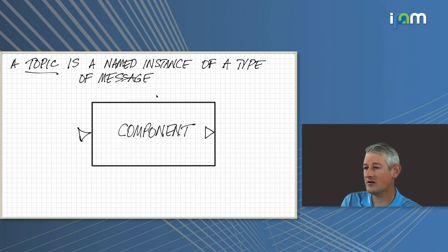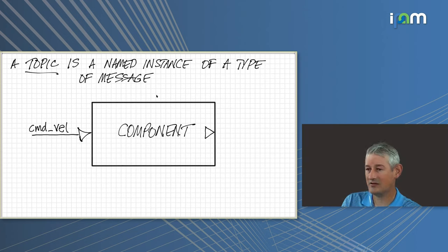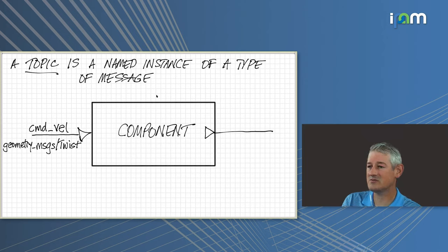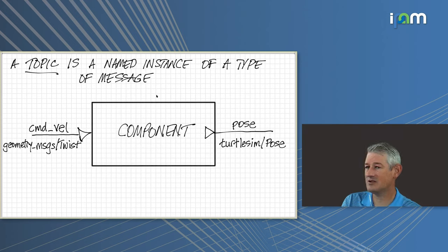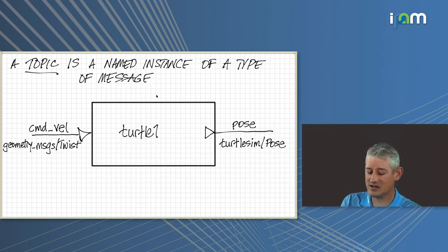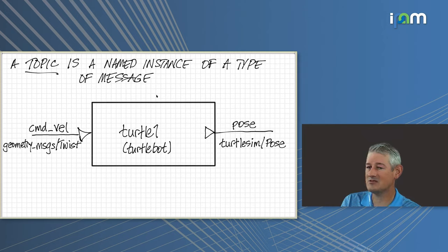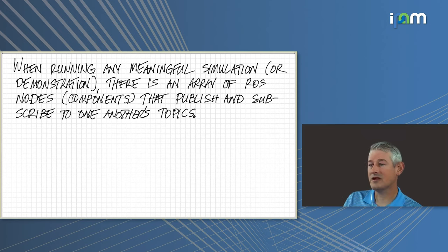In terms of how we think about this for a ROS component — and this is why I'm going through this — we think of the kind of message a component receives as a type, and an instance of that type being sent is called a topic. For example, a component takes input of geometry_msgs/Twist — the command velocity topic — and outputs a pose. Thinking back to turtle1, it's an instance of a TurtleBot: it produces pose messages based on receiving command velocity messages, and if it doesn't get a new command velocity message, it just sits still.